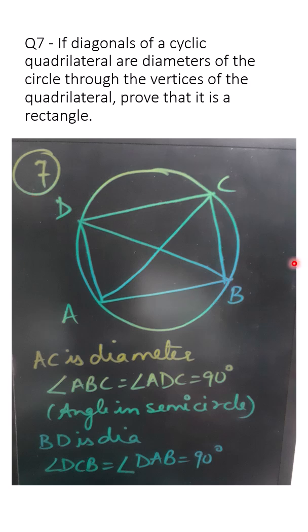So in this quadrilateral, all 4 angles are 90 degrees each. Hence, it is a rectangle.